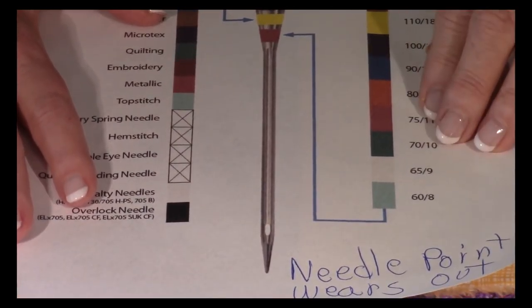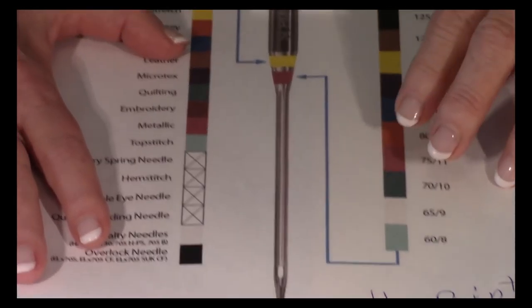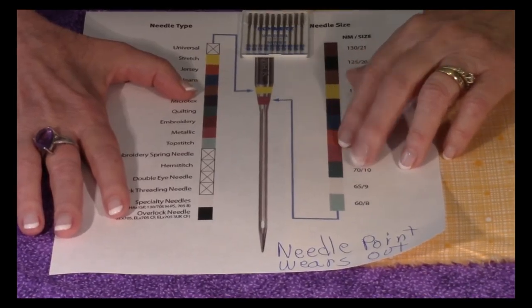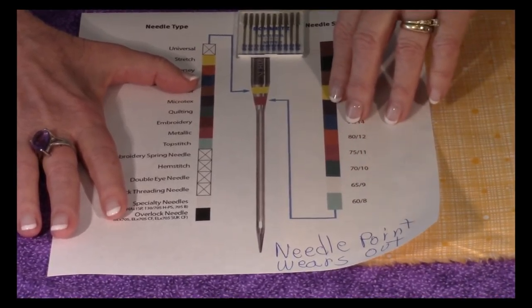So print this out, go to your manufacturer's website, print it out, stick it up on the wall next to your sewing machine. So it's right there for a quick reference.